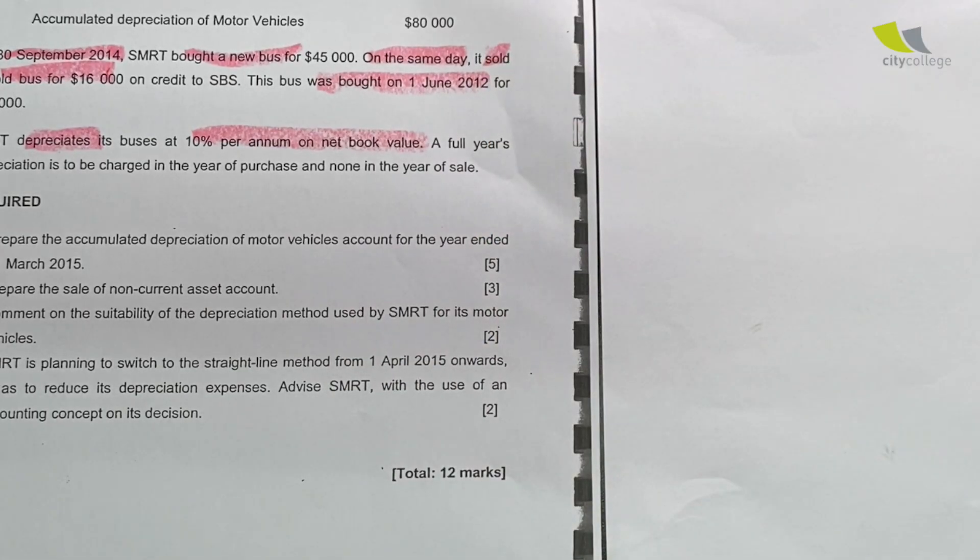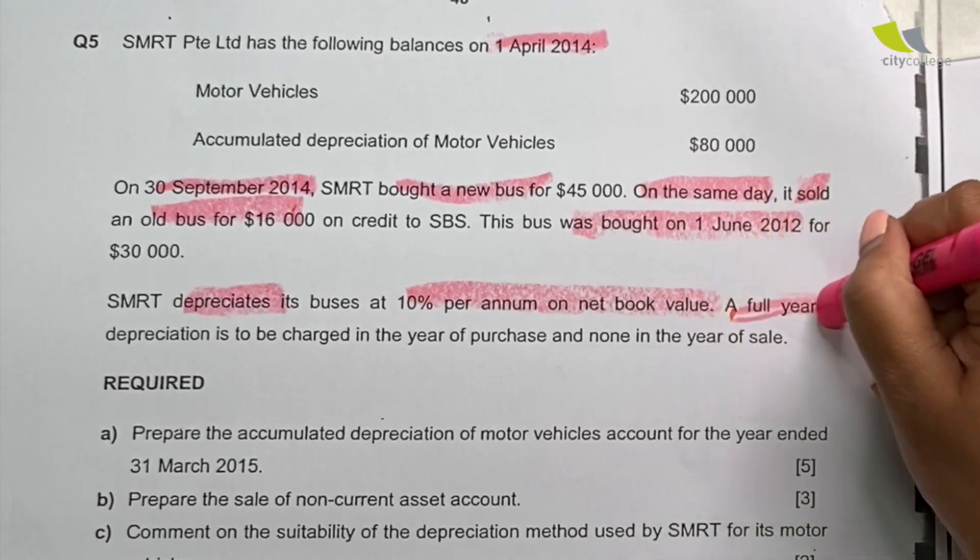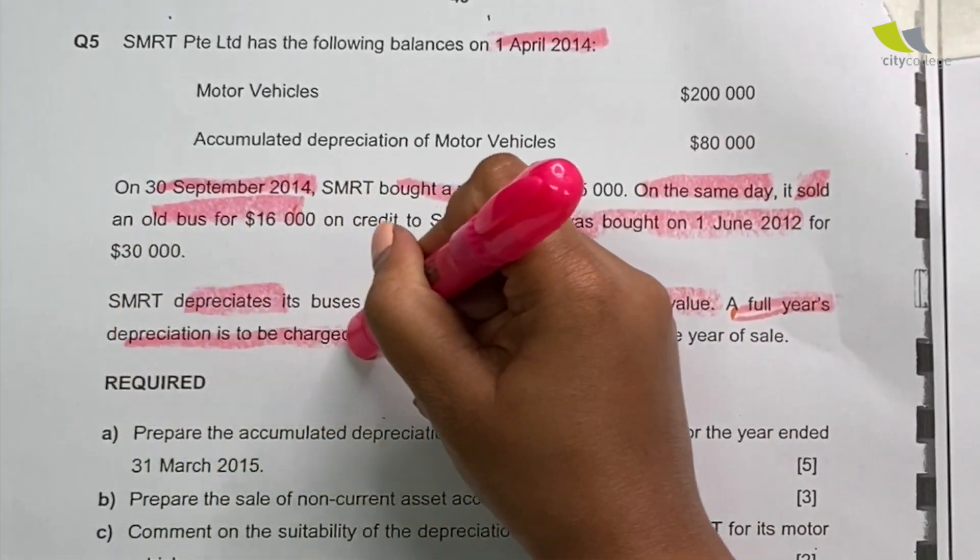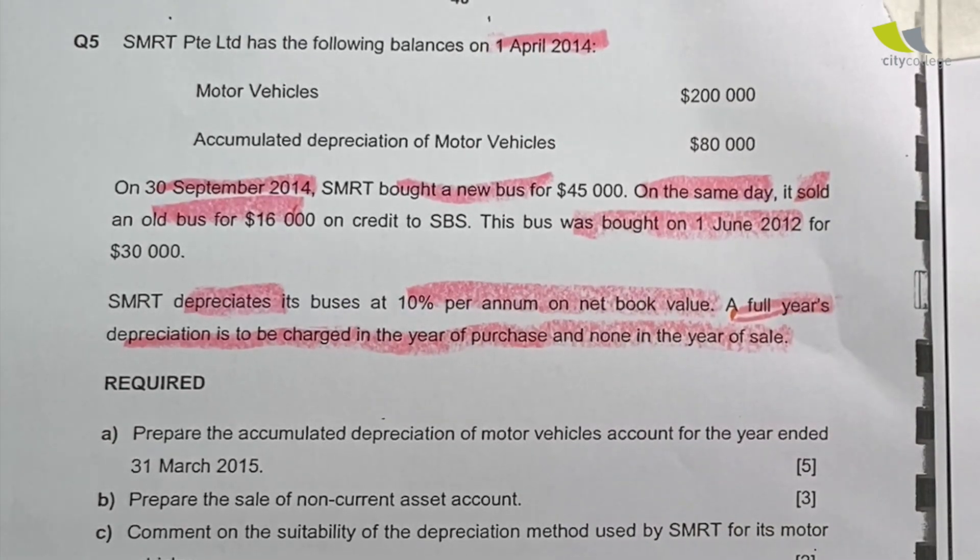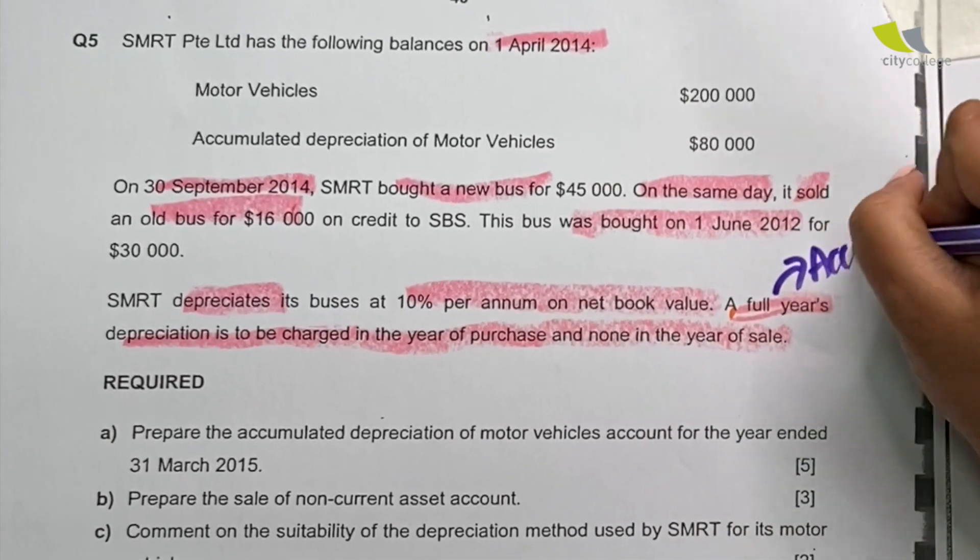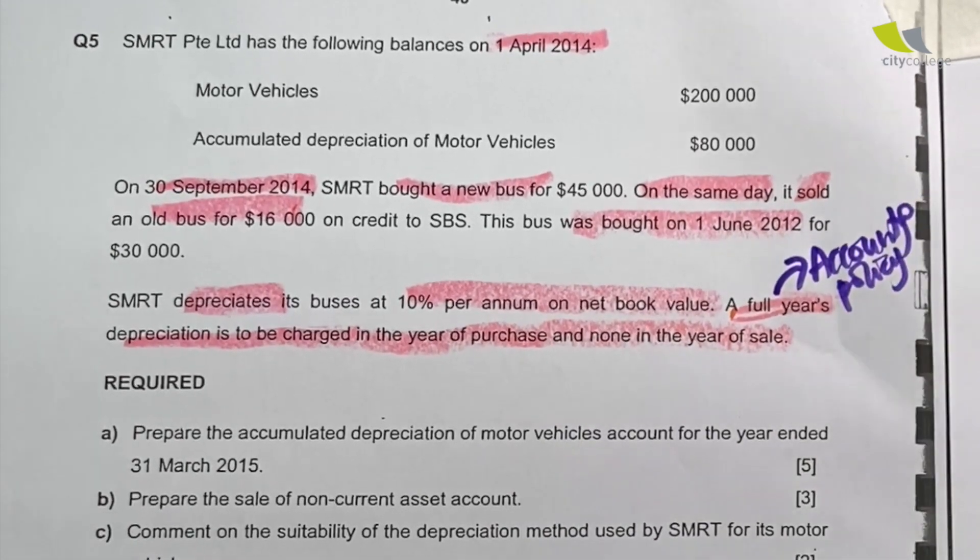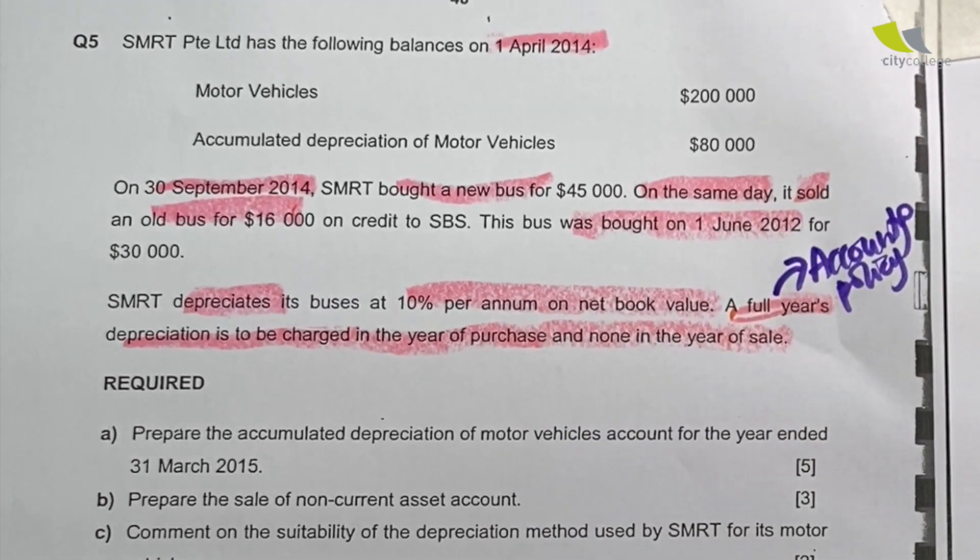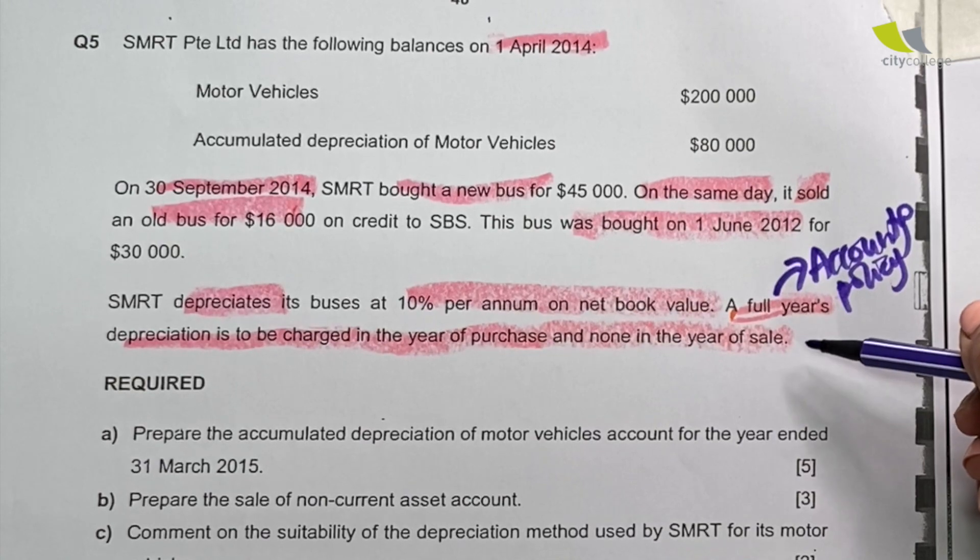Let's move on. The question goes on to say, a full year's depreciation is to be charged in the year of purchase and none in the year of sale. This is what I call the accounting policy. The policy is actually created by the accountant to make life easy.